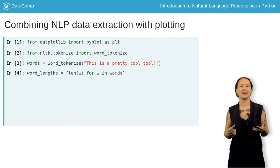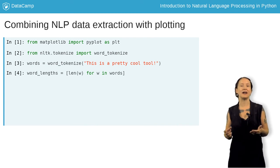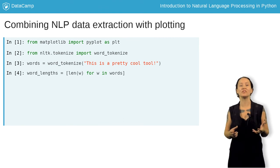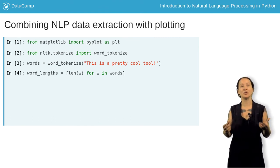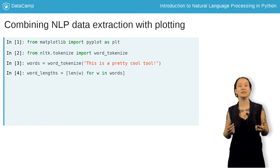As a brief refresher on list comprehensions, it is a succinct way to write a for loop. If we look at the syntax, we have opening and closing square brackets. Then, we can iterate over any list and make it a new list using this simple syntax. Here, we create a list that holds the lengths of each word in the words array, simply by saying len(w) for w in words. This will iterate over each word, calculate the length, and return it as a new list.